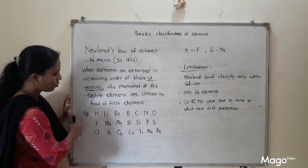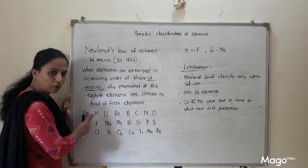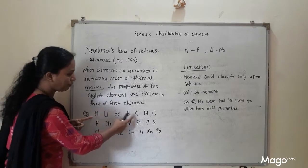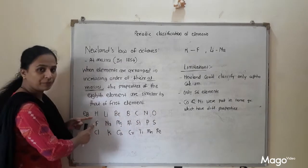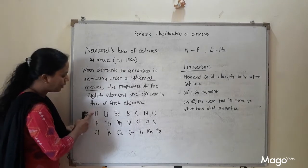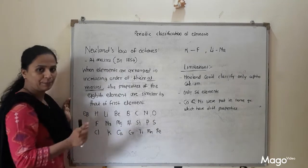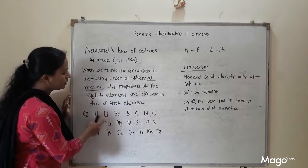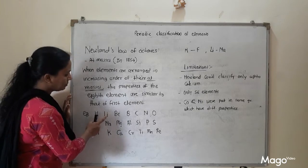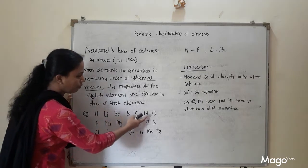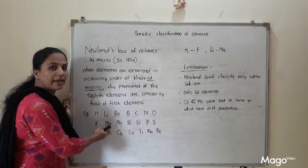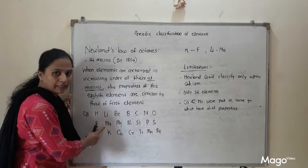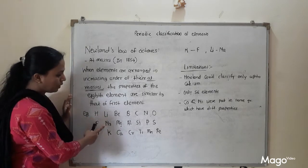When we tally Newland's law with examples: if we take hydrogen as the first element, counting 1 through 8, fluorine is the 8th element. So properties of hydrogen and fluorine are similar. When we take lithium as the first element, counting 1 through 8, sodium is the 8th element. So properties of lithium and sodium are similar.